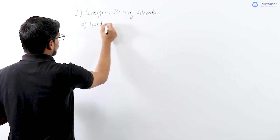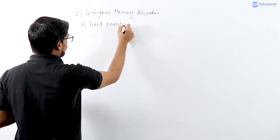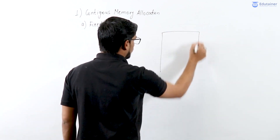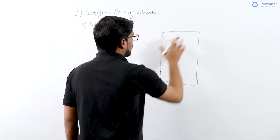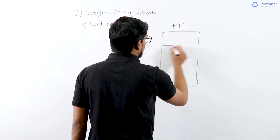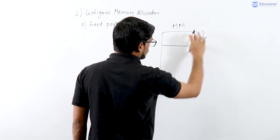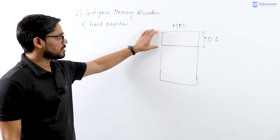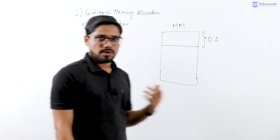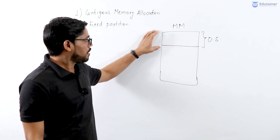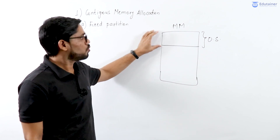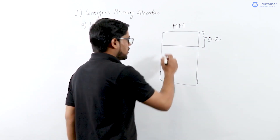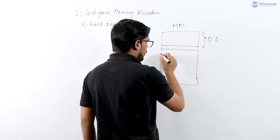The first type of contiguous allocation is fixed partitioning — we partition the memory in a fixed manner. In main memory, some space is occupied by the operating system because whenever you start a computer, it boots the OS into main memory.